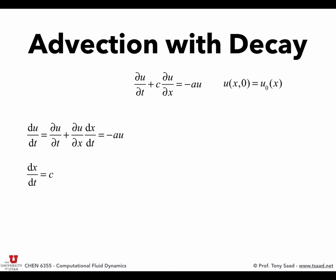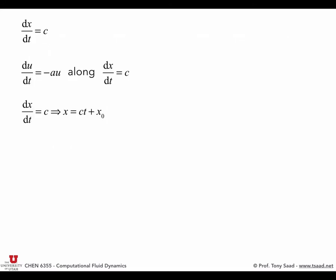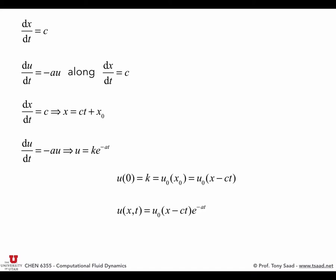Integrating dx/dt = c gives x = ct + x₀, or x₀ = x - ct. Then du/dt = -au gives u = K·e^(-at), where K comes from the initial condition. At t = 0, u(0) = K = u₀(x₀). Since x₀ = x - ct, the total solution is u(x,t) = u₀(x - ct)·e^(-at). That's how you solve the PDE — isn't this cool?